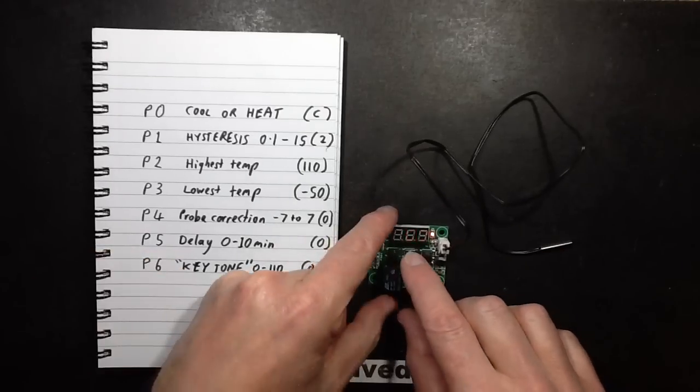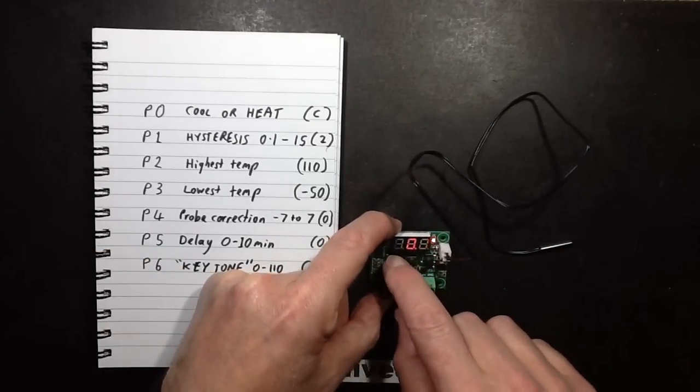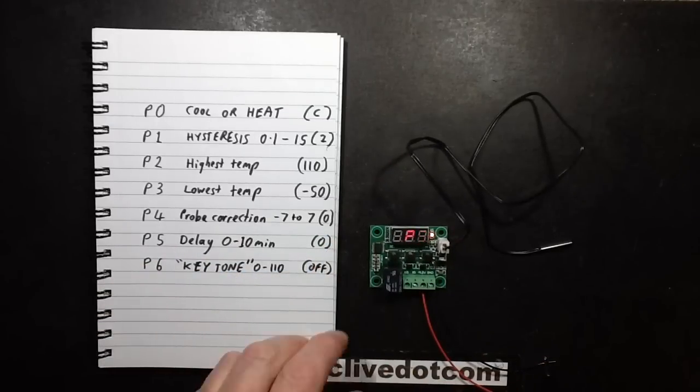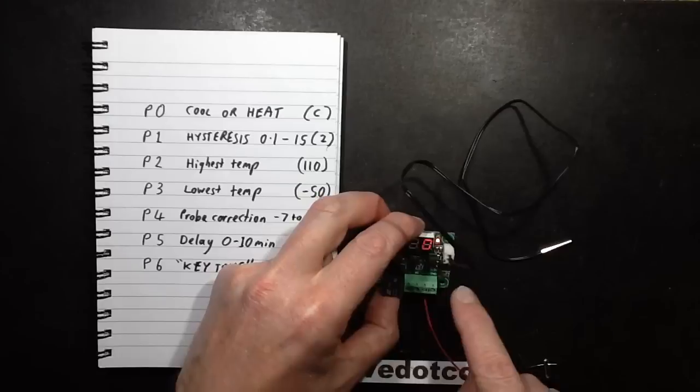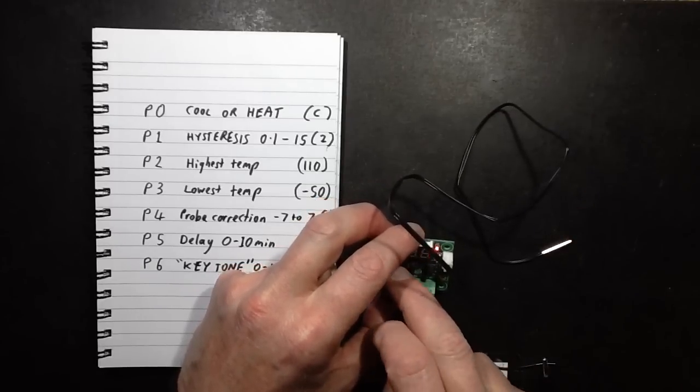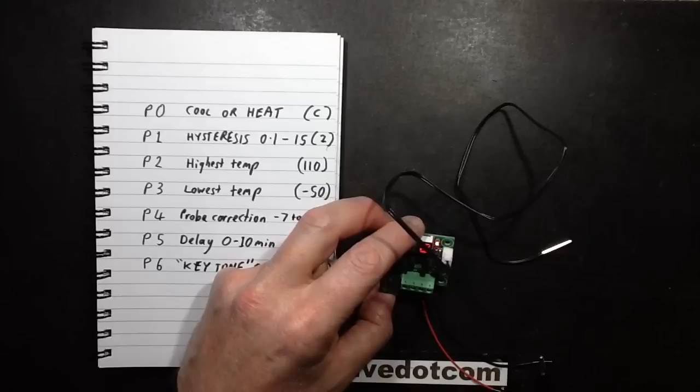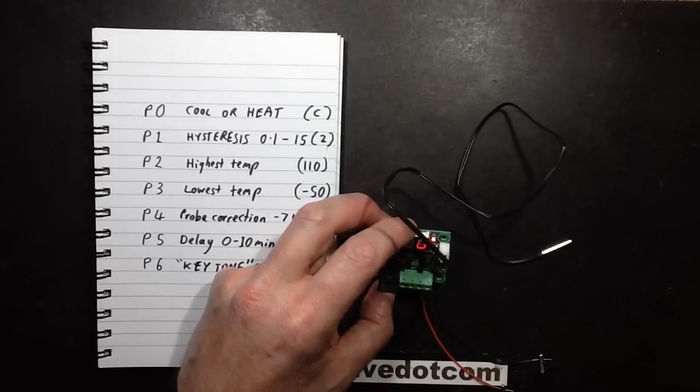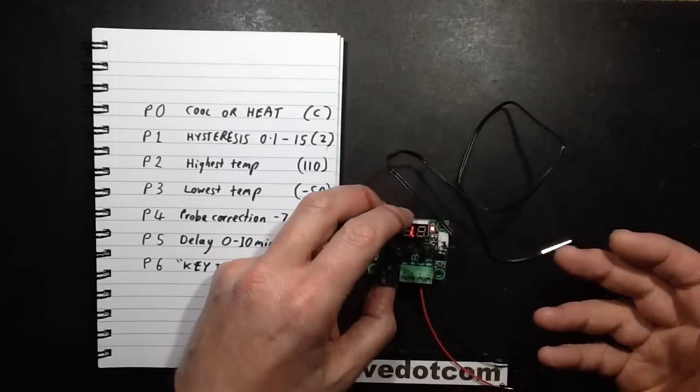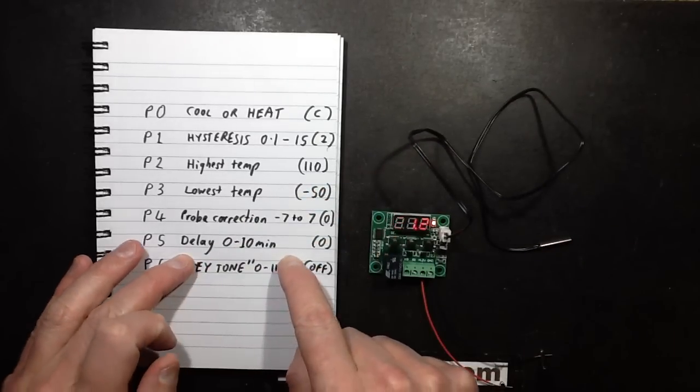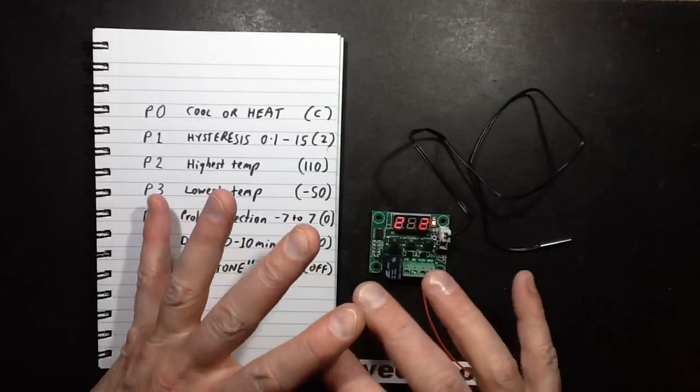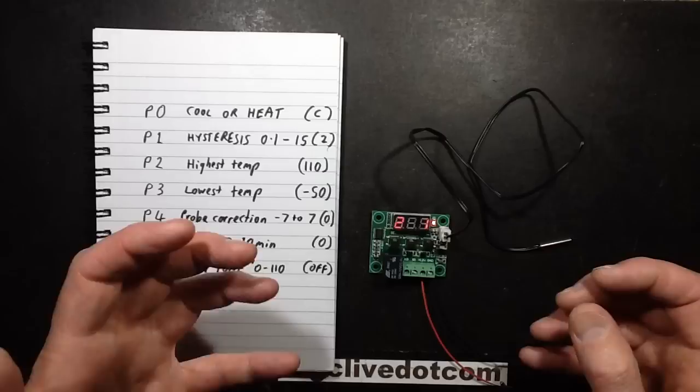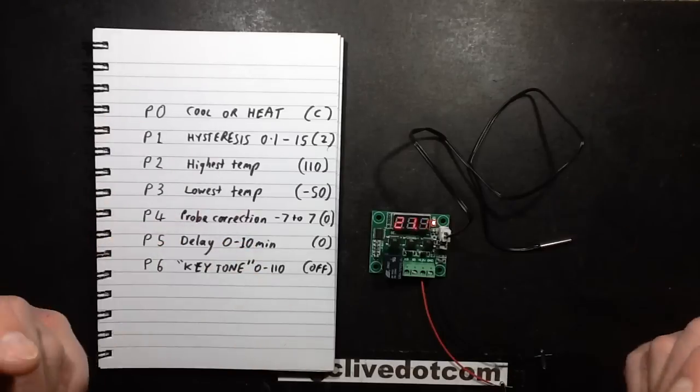The next function, P5, is a delay of zero to ten minutes. At the moment it's set to zero, which means it reacts instantly. But if you set a time delay, this could be handy if for instance you had a motor that couldn't be cycled. You had to leave it to cool down for about five minutes before running it again. You could set a five minute delay so that there was no chance at all, even if the temperature was fluctuating wildly, that the motor or whatever it was could be cycled on and off too often.